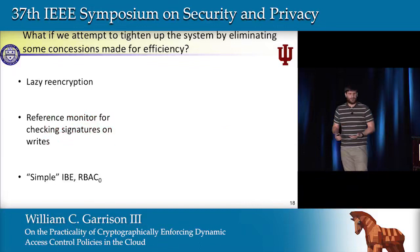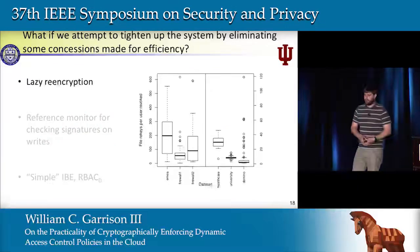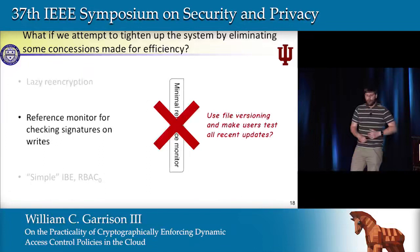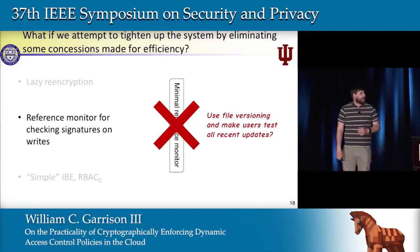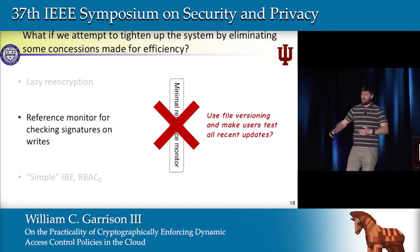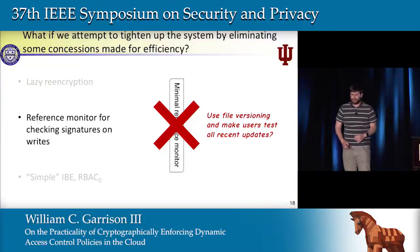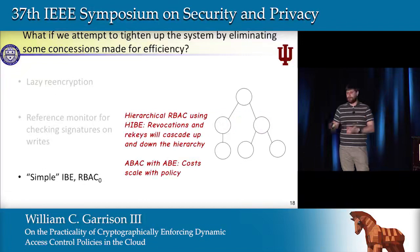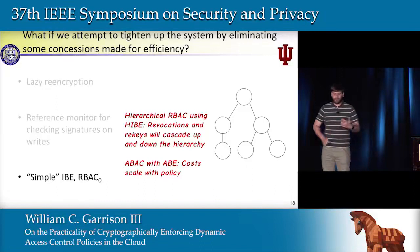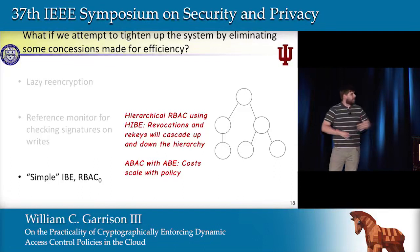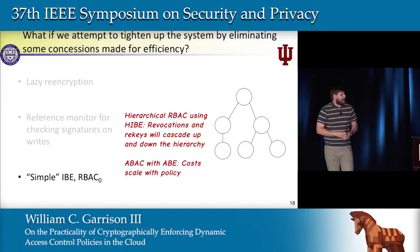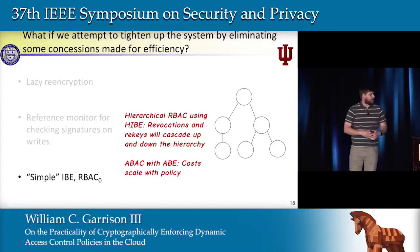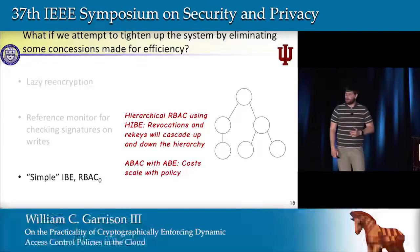If we tighten the system by eliminating lazy encryption — re-encrypting files at revocation time — that means tens or hundreds of files need to be re-encrypted on the spot, further delaying the state change. We could weaken trust in the reference monitor in ways discussed in the paper, including file versioning, though that requires readers to download many copies and verify many signatures. Moving to more expressive crypto like hierarchical IBE or attribute-based encryption makes costs even larger: hierarchical RBAC management was very expensive, and ABE costs scaled with policy complexity.